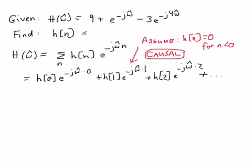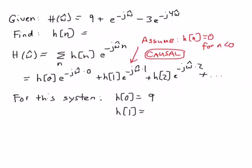So if we write that out for this system, we know, based on reading off of here, we know that h of 0 is equal to 9, and h of 1 is going to be equal to, this is the term associated with h of 1. There's a 1 implied in front there. It's equal to 1.